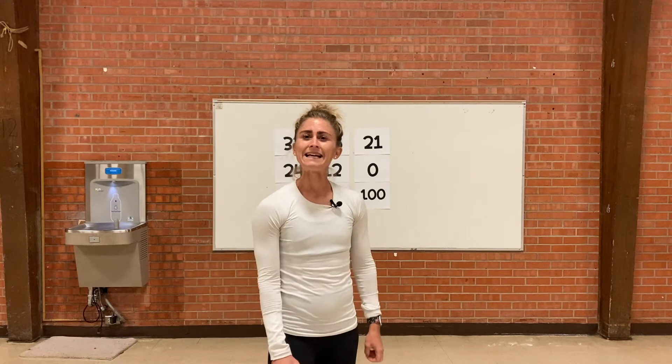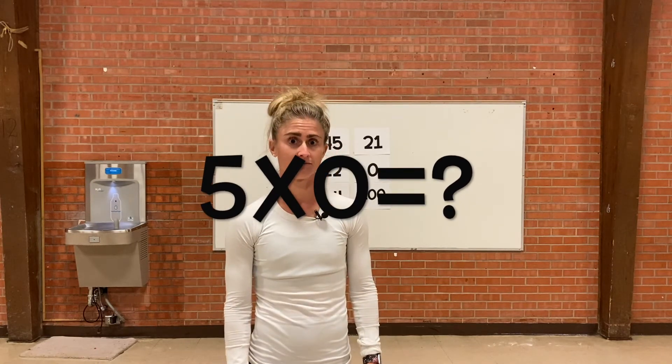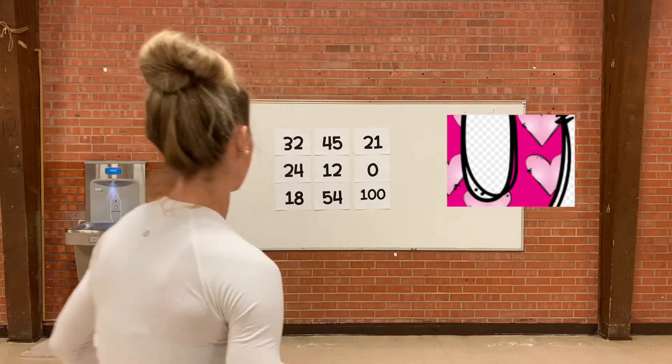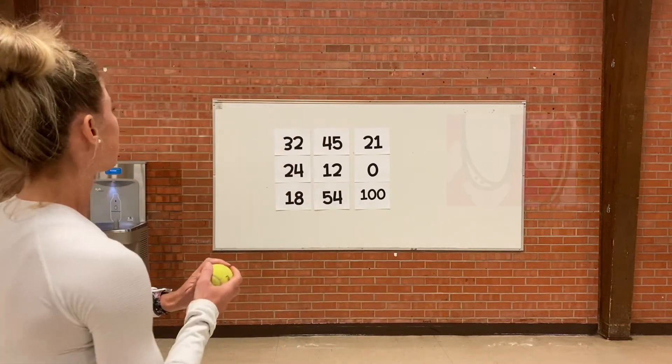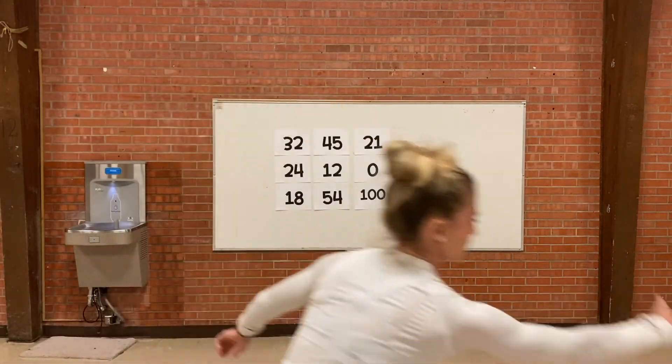What is five times zero? If you multiply anything by zero, you get zero! So zero is my target. Ready — step, extend, follow through at my target. Perfect! We have a couple more to hit.